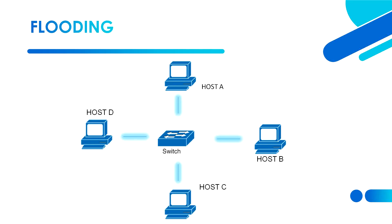When the switch receives the packet, it sees that there are no MAC addresses in its MAC address table, so it will broadcast the packet to all ports except the port from which it received the packet. When it broadcasts the packet, all hosts will receive it, including the destination Host B.